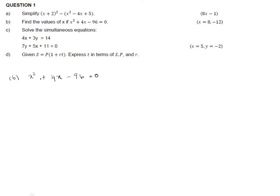If using a calculator, compare this quadratic equation with the general form ax² + bx + c = 0. So a is 1, b is 4, and c is negative 96. We get (x - 8)(x + 12) = 0, which gives us x = 8 or x = negative 12.